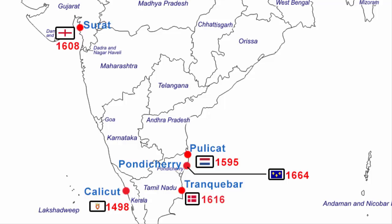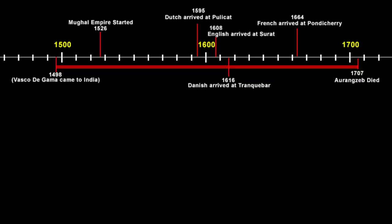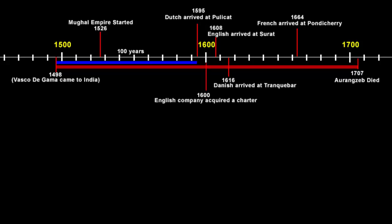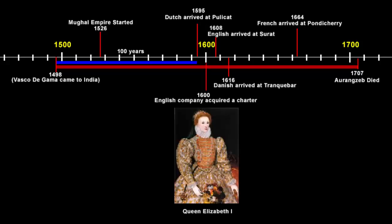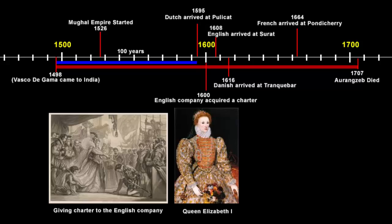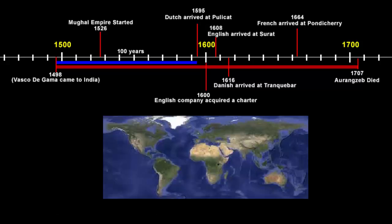Let's understand how the British arrived in India. It all started in 1600. The English company acquired a charter from the then ruler of England, Queen Elizabeth I. A charter means a written legislative paper of a country. Queen Elizabeth I signed a paper giving this English company the complete individual right to trade with the eastern countries. With this charter, the company went to the eastern side through the ocean route, looking for new lands from which it could buy goods at cheap prices and carry them back to Europe to sell at higher prices.